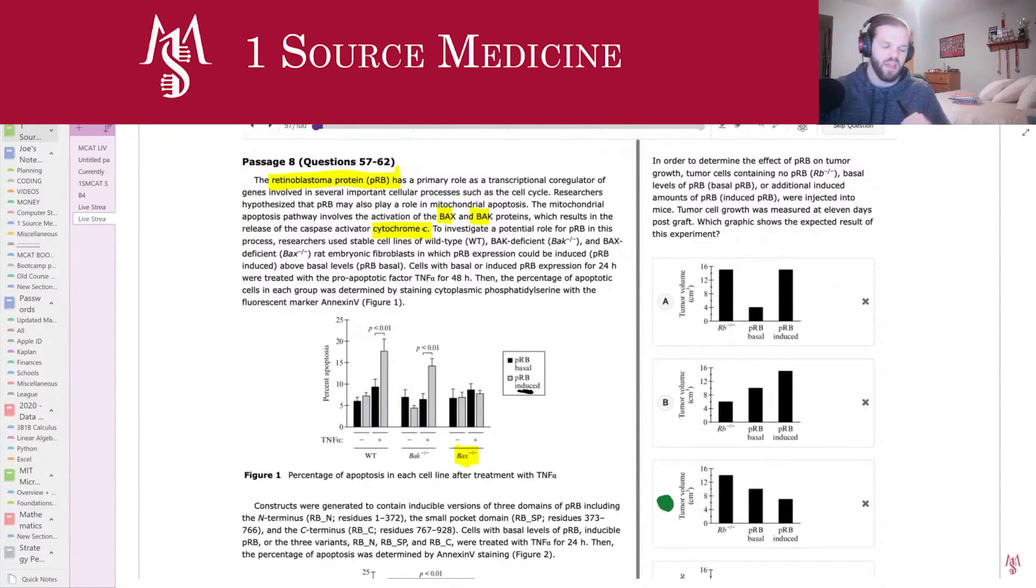Okay, and so given the fact that we get more apoptosis when we have more PRB, I'm going to predict that tumor volume is actually lower when we have more PRB. The reason for that is because tumors want to suppress things that are going to cause apoptosis. That's how their growth becomes uncontrolled, right? Exactly.